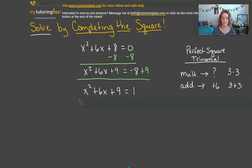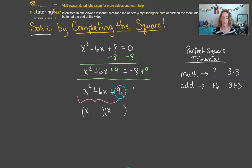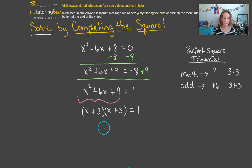We've used the addition property to create a perfect square. x squared plus 6x plus 9 is now a perfect square we can factor. We break it into two binomials: x plus 3 and x plus 3 — since they're the same, we rewrite it as x plus 3 squared equals 1. Now we've completed the factoring section and need to actually solve to get x by itself.